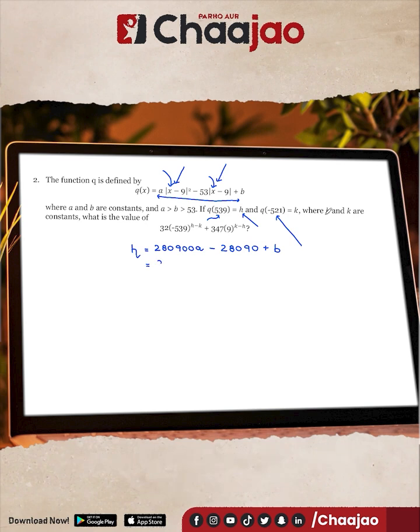So 280,900a, and if you put negative 521 minus 9 you'll get negative 530 again. But since there's a modular symbol, that automatically becomes positive 530. If you multiply positive 530 by negative 53, you'll again get the same value of minus 28,090 plus b equal to the constant k.